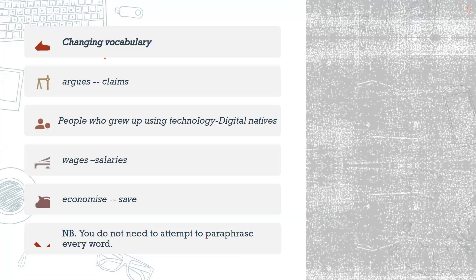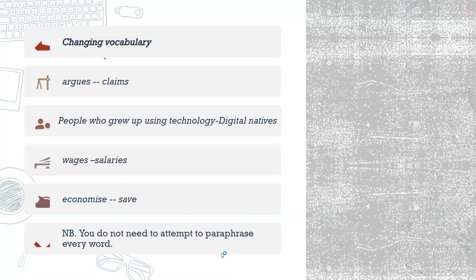For example, in changing vocabulary, you can encounter the word 'argues' and change it to 'claims.' People who grew up using technology may be referred to as 'digital natives' — that's where you can also economize on words. You have 'wages' or 'salaries,' and to economize you can say 'save.' Note that there is no need to paraphrase every single word. You don't need to change every single word, but you should ensure that whatever you represent in your summary or paraphrase is significantly different from what the original writer included in their piece of writing.